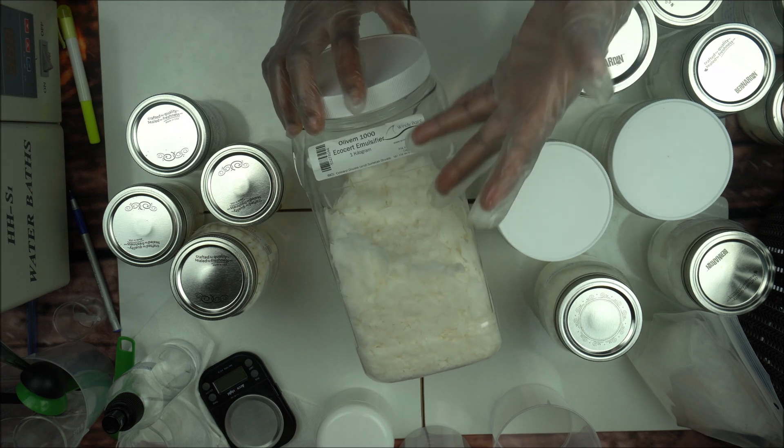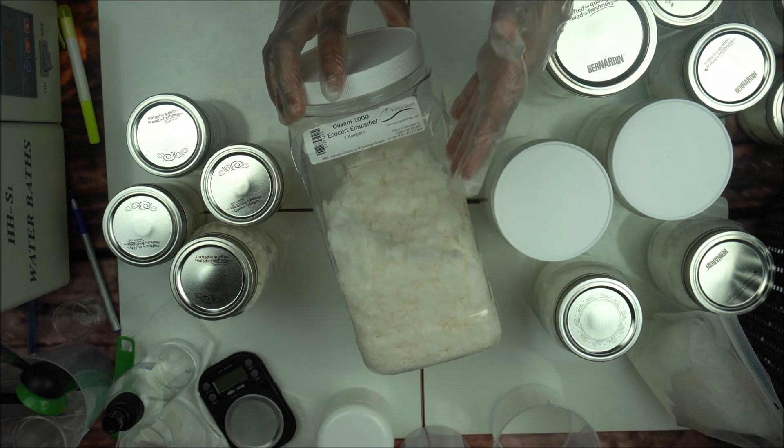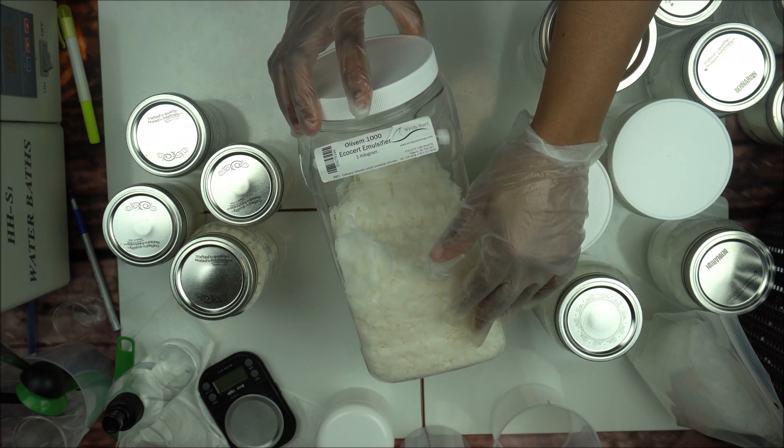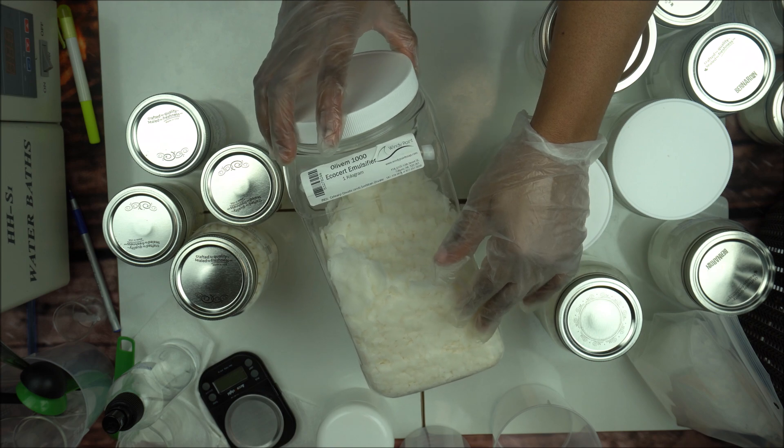You can actually use this also to make conditioner, hair conditioner for instance. So you don't have to worry about the soaping. If you cannot use your Olivem 1000 to make lotion because you cannot add dimethicone to it, then you can use it to make shampoo or conditioner. It makes beautiful conditioner.